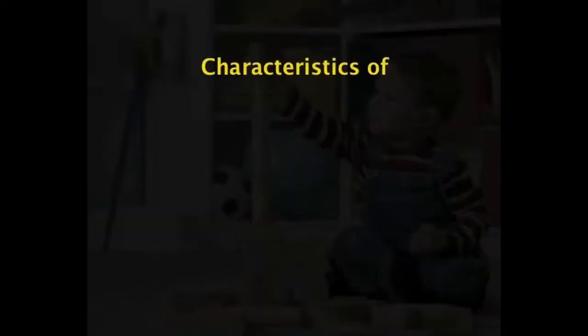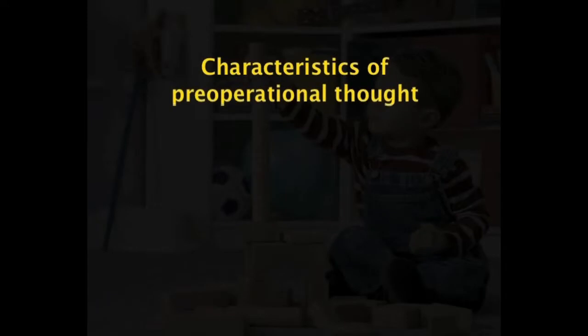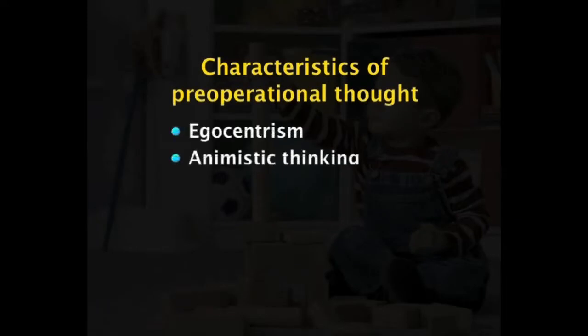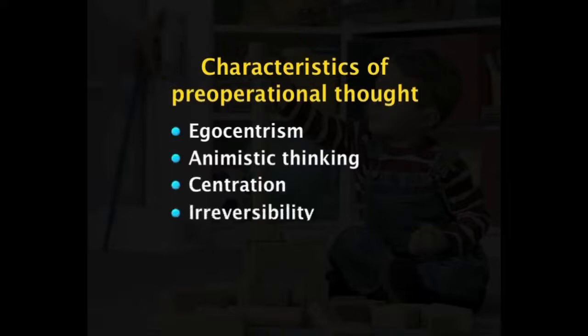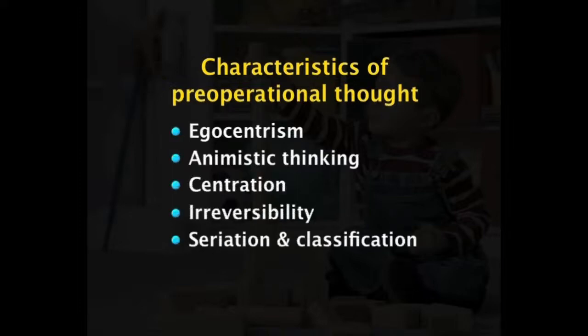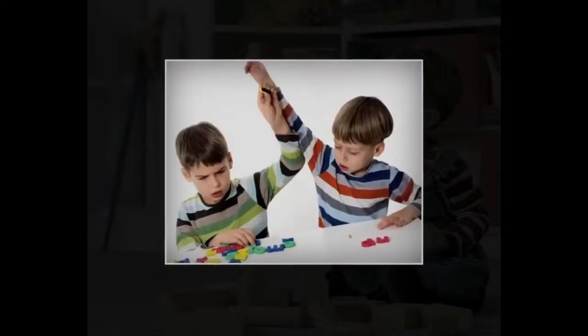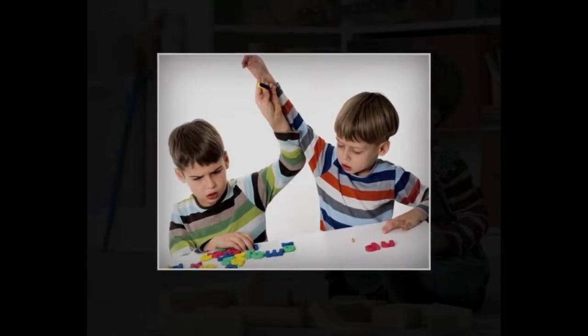The characteristics of pre-operational thought include egocentrism, animistic thinking, centration, irreversibility, seriation, and classification. Pre-operational children cannot take the role of another person; they are limited by egocentrism — cognitively self-centered, looking at the world only from their own point of view and ignoring others' perspectives. They assume that everyone thinks as they do and that the whole world shares their feelings and desires.